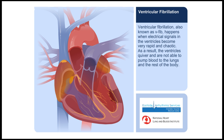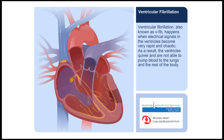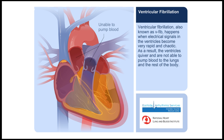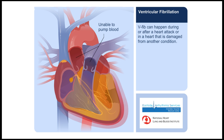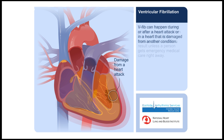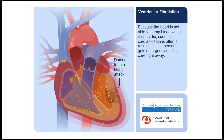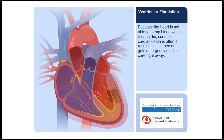Ventricular fibrillation, also known as V-fib, happens when electrical signals in the ventricles become very rapid and chaotic. As a result, the ventricles quiver and are not able to pump blood to the lungs and the rest of the body. V-fib can happen during or after a heart attack or in a heart that is damaged from another condition. Because the heart is not able to pump blood when it's in V-fib, sudden cardiac death is often a result, unless a person gets emergency medical care right away.